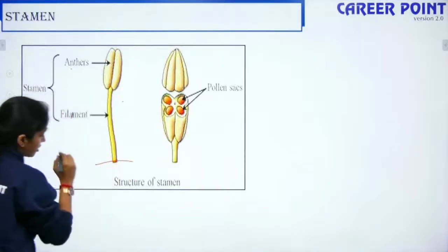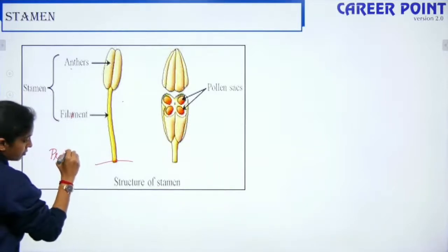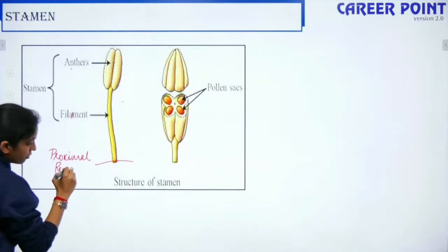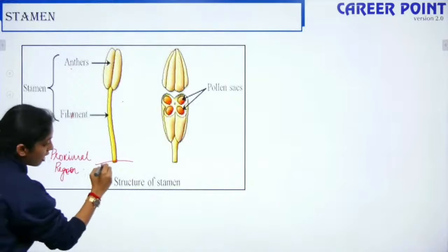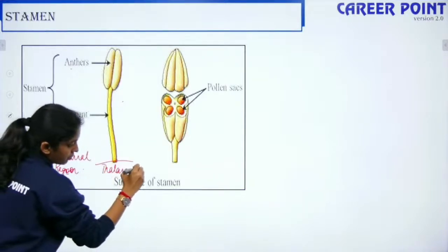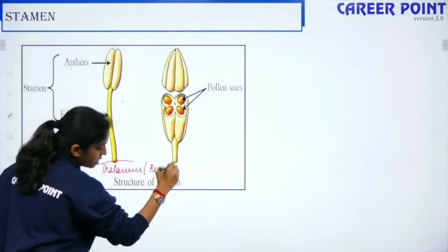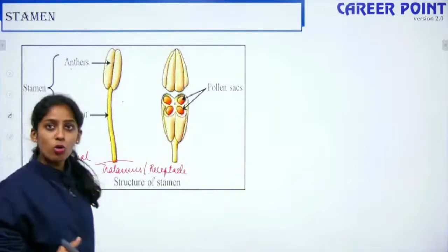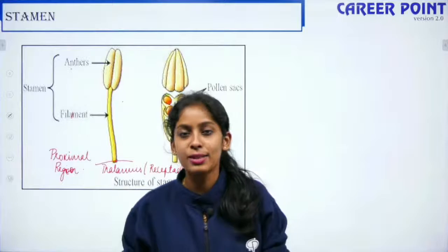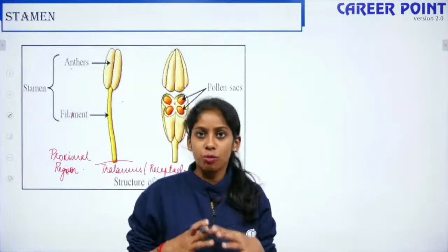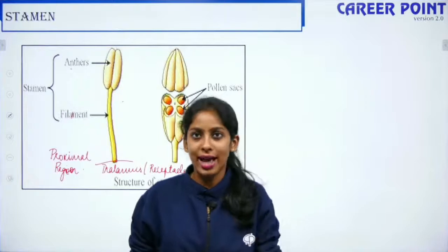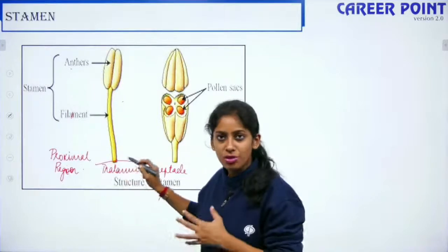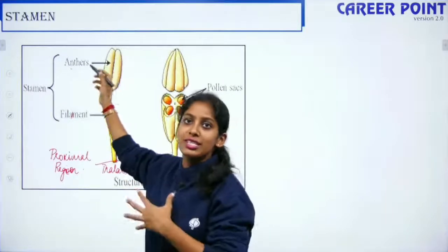The proximal region of the filament is the thalamus or receptacle — the portion of the flower from where the four whorls arise. The four whorls of a flower are: androecium, gynoecium, calyx, and corolla. The point from where these four whorls arise is the thalamus or receptacle. The proximal region of the filament is the thalamus and the distal region is the anther.